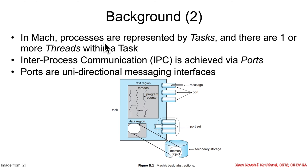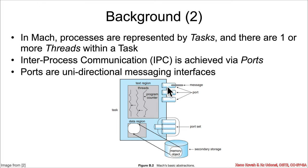In Mach, what we normally think of as a process is called a task, and there are one or more threads within a task. The thread is the actual execution — there can be many, but always at least one — and the task is the container holding all associated information. An important thing the task has is ports, because in this design paradigm messages are sent around through various components via inter-process communication.